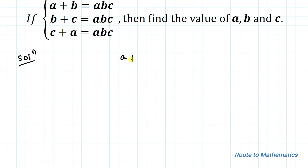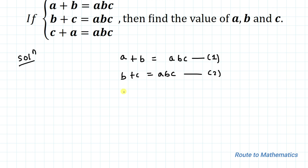We have given: a plus b equals abc — let's take it as the first equation. Our second equation is b plus c equals abc, and our third equation is c plus a equals abc. You can observe that all the right-hand side values are abc, meaning they are all equal.